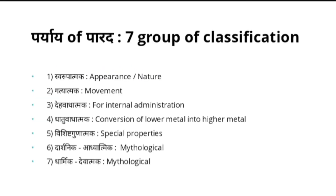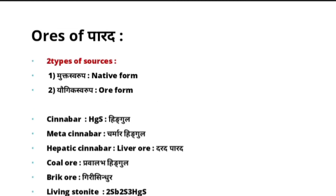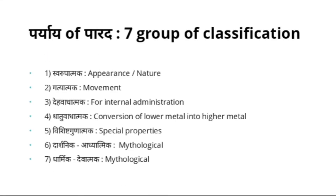What are the Pariyaya — synonyms — of Parada? We have seven groups of classification. The first group is Svarupatmaka — based on appearance or nature. Second, Gatyatmaka — based on movement, since it is a liquid metal. Third, Deha Vadatmaka — for internal administration based on disease-curing capacity. Fourth, Dhatu Vadatmaka — based on conversion of lower metal to higher metal. Fifth, Vishishtagunatmaka — based on special properties. Sixth and seventh, Dharshanika and Adhyatmika — or Dharmika and Devatmaka — mythological classifications.